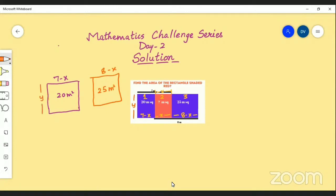this is also y and the area of this red portion is x multiplied by y. So let's calculate from the first part: 7 minus x into y equals 20 meters square.